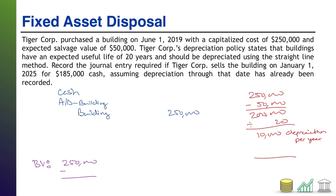We've cleared out all the information that's changing; everything else stays the same. Pause the video, see if you can finish the journal entry based on this new information. Welcome back. We know that we're getting $185,000 in cash this time. The real crux of this one is figuring out what the accumulated depreciation is now that we've fast-forwarded all the way to January 1, 2025.